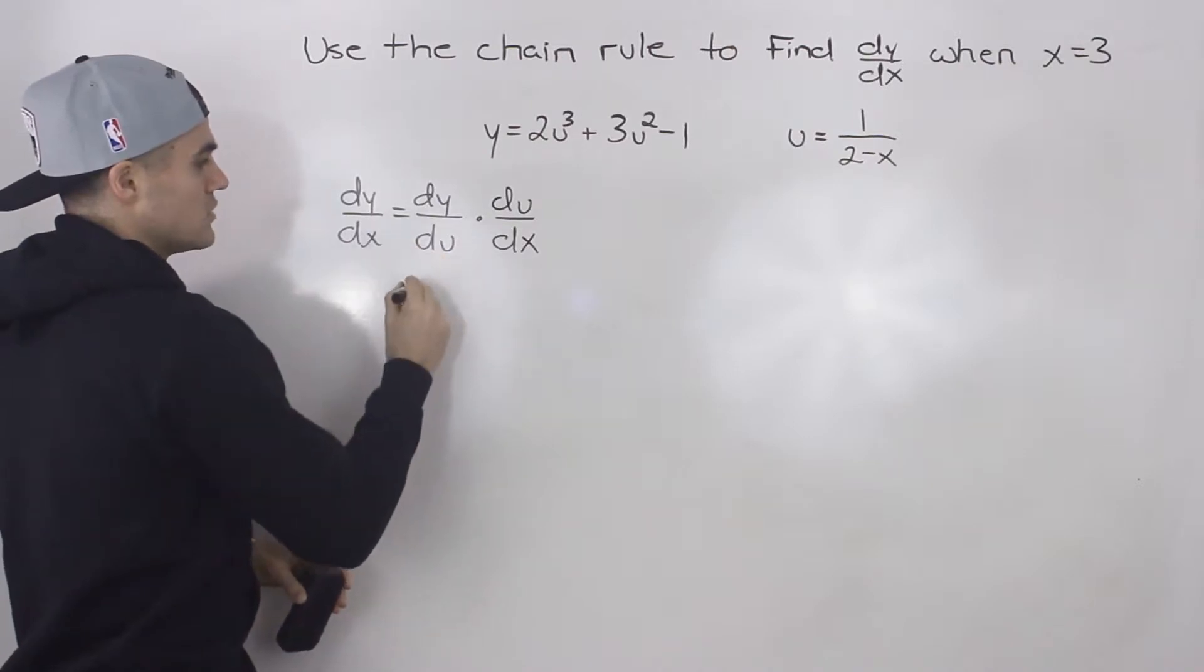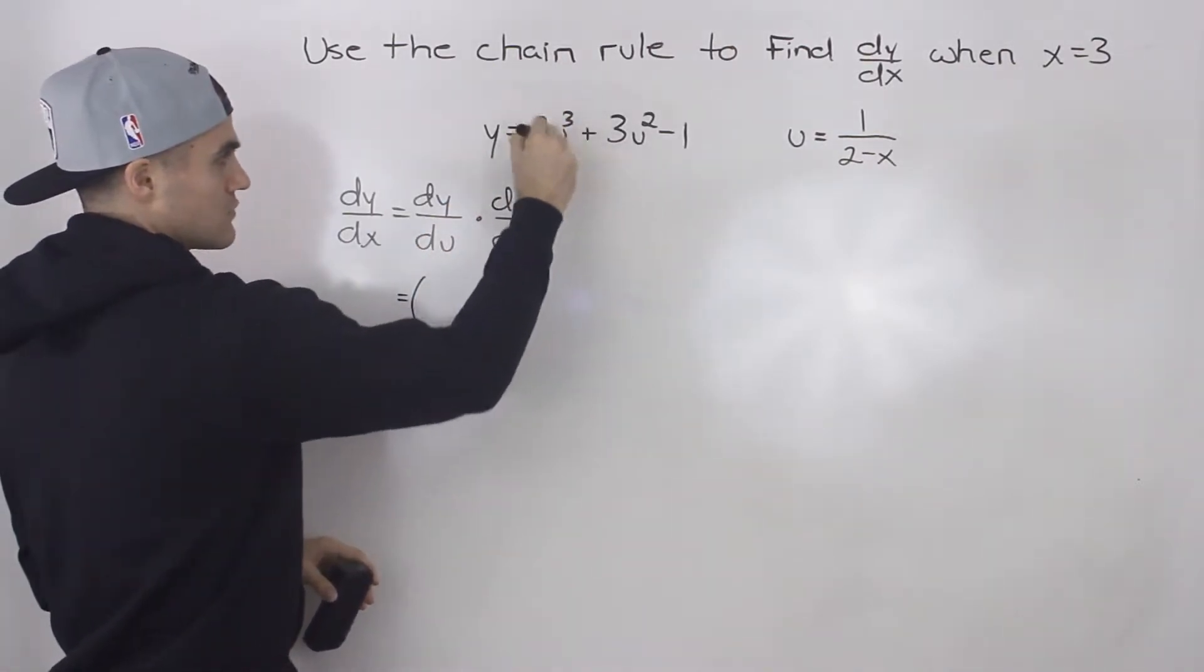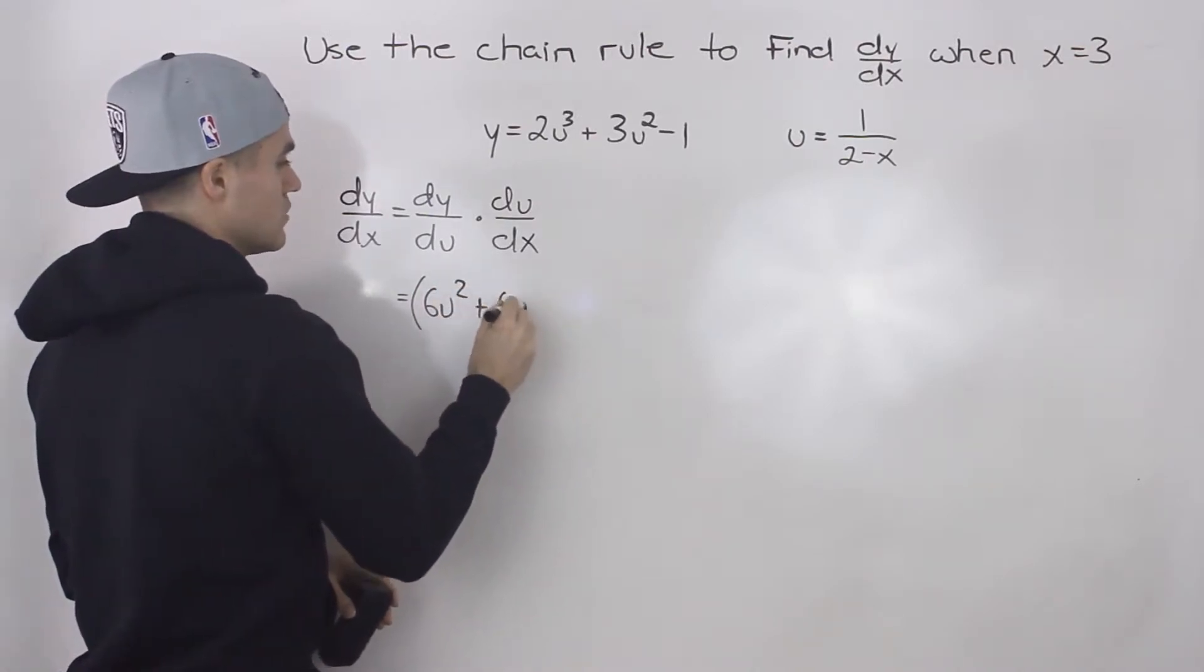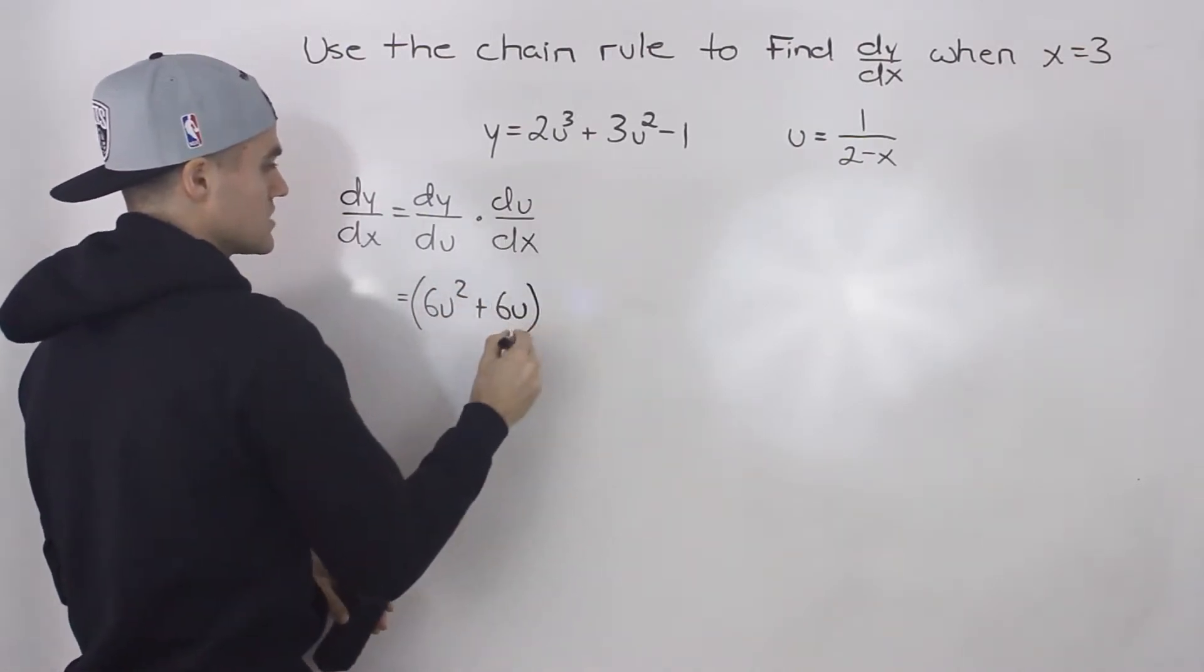So dy/du would be what? We would just have to differentiate this here. So it would be 6u² plus 6u. The minus 1 would differentiate to 0.